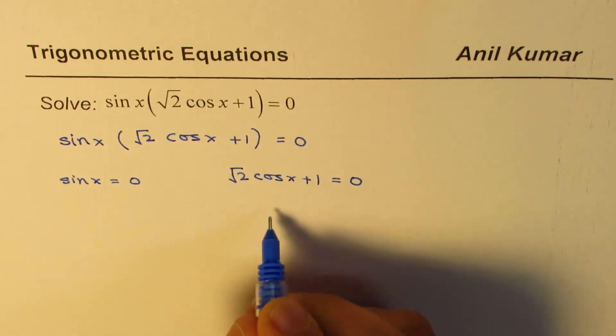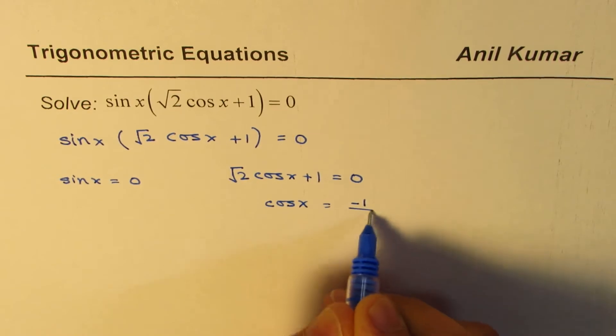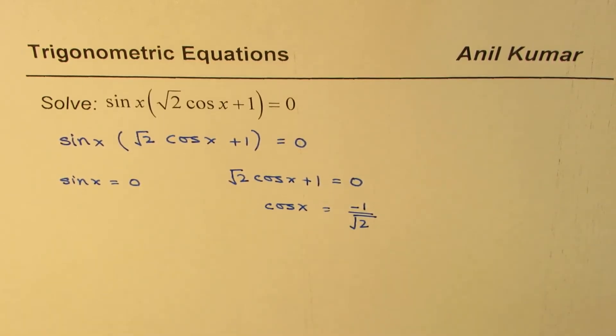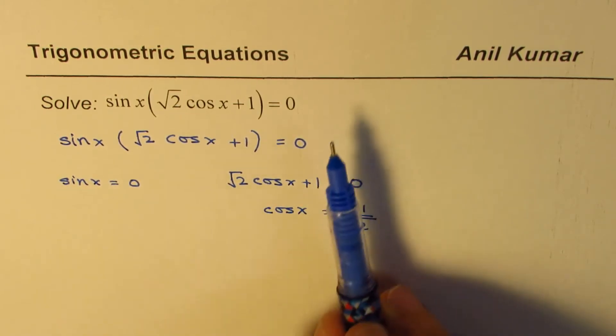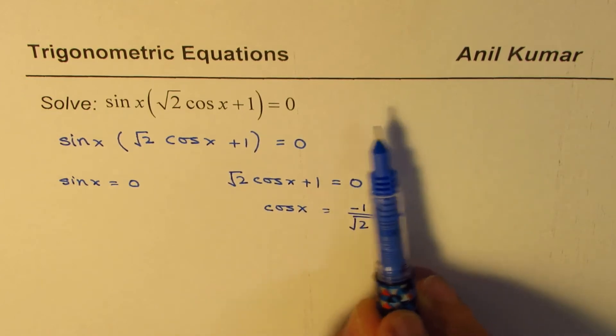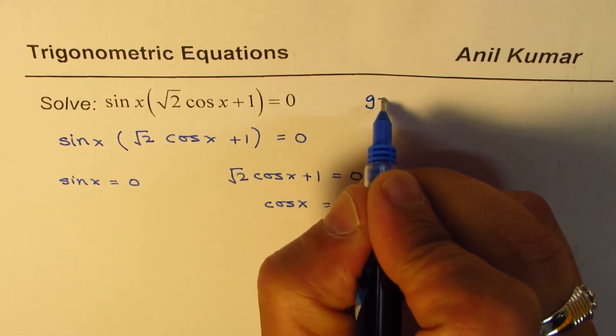This could be solved and written as cos x equals to minus 1 over square root 2. Now let's try to figure out how to write all possible solutions for this case. We are not given any domain here, it means that we have to write general solution.